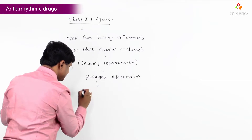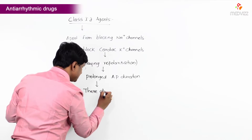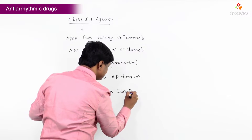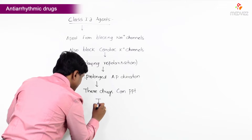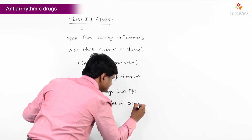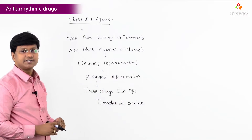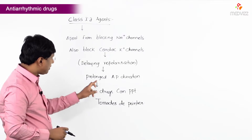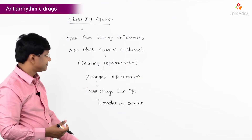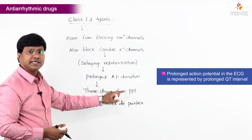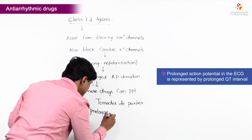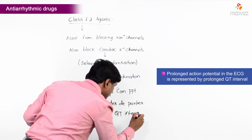Due to prolongation of the action potential duration, these drugs can precipitate Torsades de Pointes. Prolonged action potential duration is represented in the ECG by a prolonged QT interval.